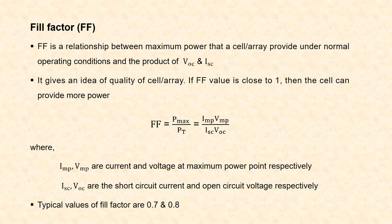Fill factor gives the relation between maximum power that a cell or array provides under normal operating condition and the product of open-circuit voltage and short-circuit current. It gives the idea of quality of cell or array. If the fill factor is close to 1, the cell can provide more power. The formula is: fill factor equals Pmax divided by Pt, that is, the maximum power divided by the product of short-circuit current and open-circuit voltage. The maximum power the cell provides is given by the product of current at maximum power point and voltage at maximum power point. Typical values of fill factor are 0.7 and 0.8.